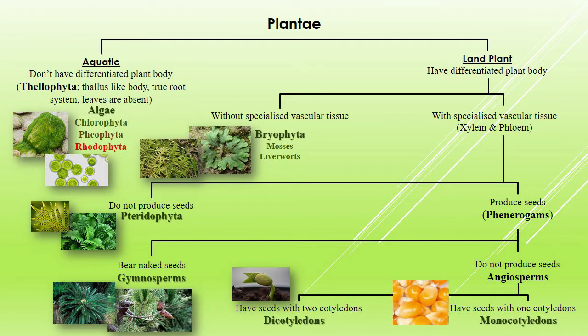First, plants are grouped on the basis of their habitat — whether plants grow in water or on land. If the plants grow in water, they are aquatic; algae are included in this group. On the basis of characteristic features, algae are again divided into three groups: Chlorophytae, Rhodophytae, and Phaeophytae.